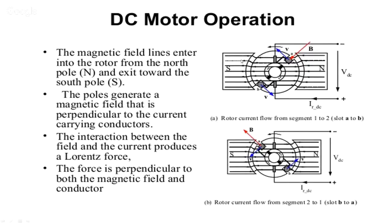This is another figure to help you understand. The arrows show the direction of the force experienced by the conductors. For coil A and coil B, one has an upward force and the other has a downward force. Overall, the armature starts rotating in the anti-clockwise direction.